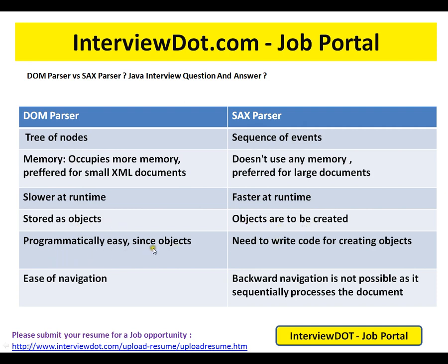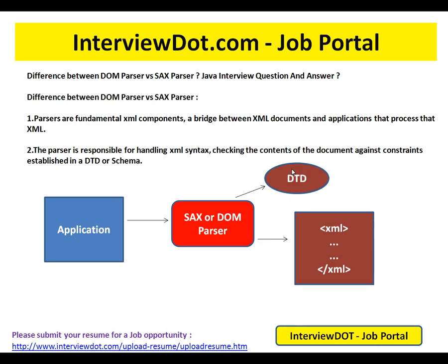Since objects need to be created by writing code, it is easy for navigation with DOM parser. In SAX parser, backward navigation is not possible as it sequentially processes the document. In the market, SAX parser is more preferred because it is faster and does not use much memory. It depends on events — it goes to each node and will have a callback function to create the objects.